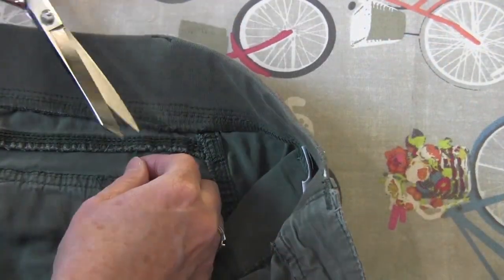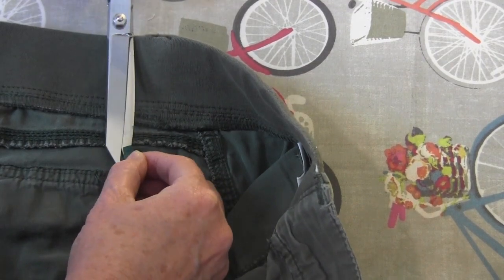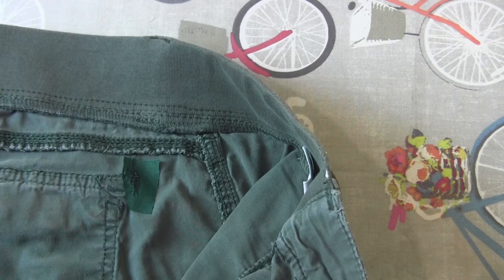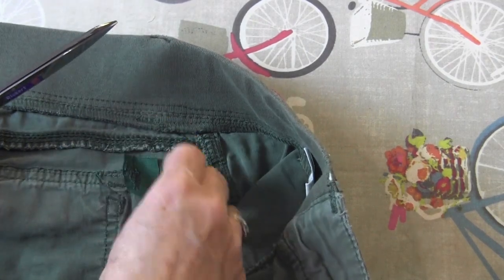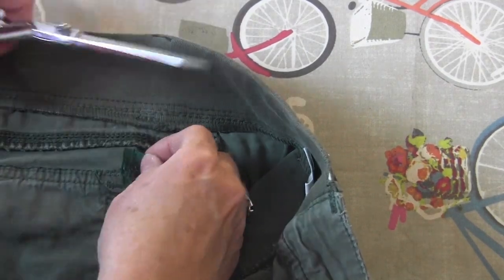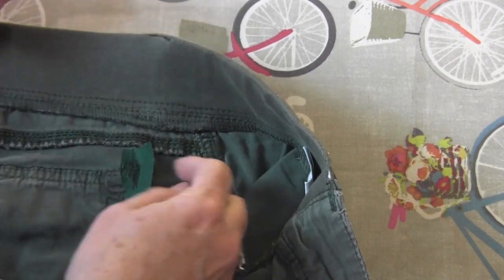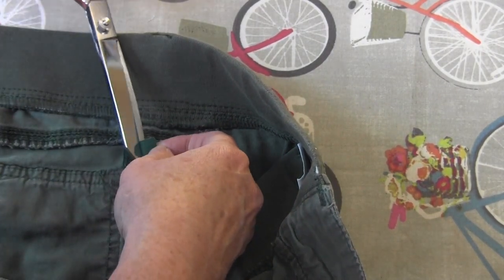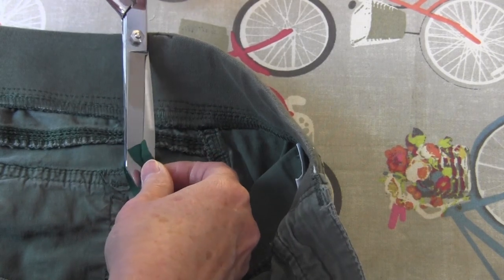The next step is to trim the patch close to the stitching. Just be sure when you're trimming you don't cut into your pants and make another hole. The edges of the patch won't fray because of the heat and bond being on there, it will keep it from fraying.